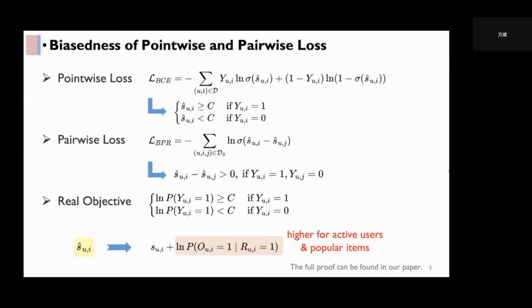Guided by this objective, we can prove that the point-wise and pairwise losses both encourage the predicted score, s hat UI, to fit the true score plus the natural log of exposure probability. Since the exposure probability tends to be higher for popular items, after the model training, the ranking of predicted scores would be biased compared to the ranking of true scores.